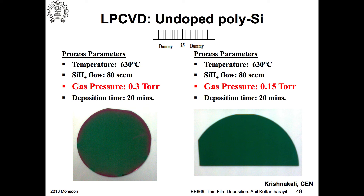Of course, now there is monolayer graphene, bilayer graphene, trilayer and so on. To distinguish all these things and whether there are defects in graphene, you need to go to more advanced techniques. This kind of color change observed during any thin film deposition indicates a variation in thickness — it immediately tells you there is a variation in thickness.